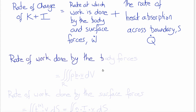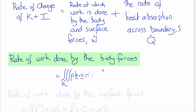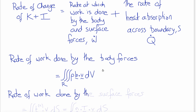The rate of work done by the body forces is equal to the volume integral over R of rho times B dot V with respect to volume. If force times displacement is work, then force times V is the rate of work.